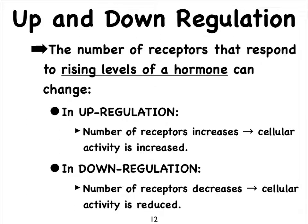Receptors for hormones are quite dynamic, meaning a cell can grow more or fewer receptors. Remember, these receptors are proteins, so it's just a matter of protein synthesis to make more of these receptors. Or the cell can choose to break these protein receptors apart into individual amino acids and recreate either a whole new protein or a whole new receptor.